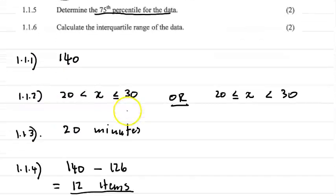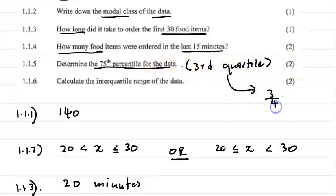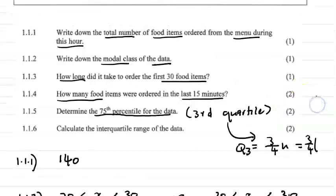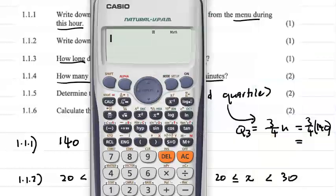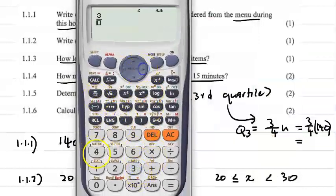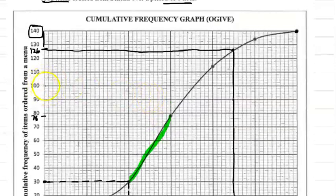For 1.1.5, determine the 75th percentile. The 75th percentile is also the third quartile. Since this is grouped data, the position of the third quartile is Q3 = (3/4) × n = (3/4) × 140 = 105. So we're looking for the 105th value. On the y-axis, 105 falls between 100 and 110, so midway at 105.